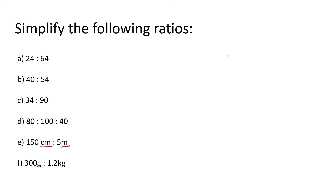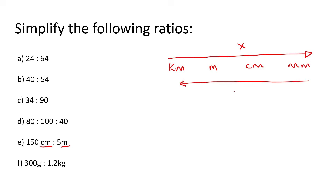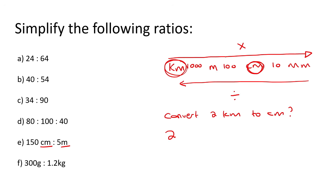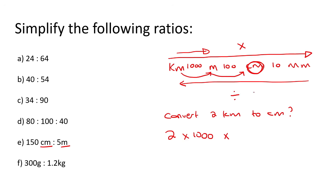When you get to distance, remember the order: kilometers, then meters, then centimeters, then millimeters. Going right, you multiply; going left, you divide. The numbers between them are 1000 from km to m, 100 from m to cm, and 10 from cm to mm. For example, to convert two kilometers to centimeters: you're going right, so you multiply. Multiply by 1000 to get to meters, then multiply by 100 to get to centimeters. Two times 1000 times 100 gives you 200,000 centimeters.